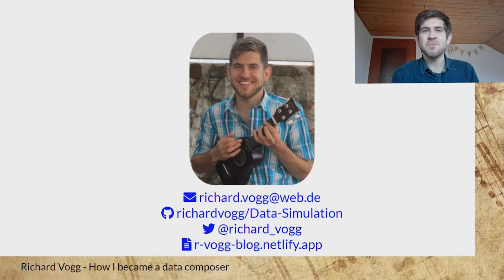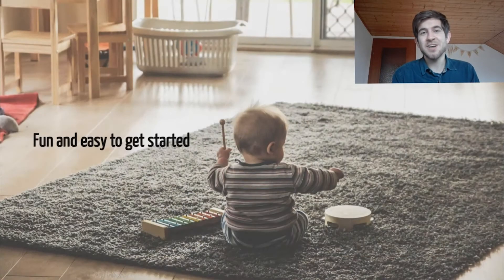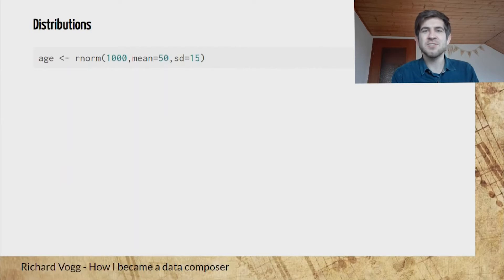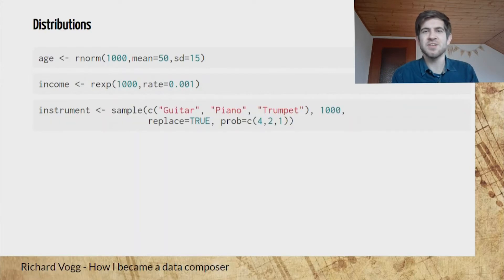Similar to a music composer who assembles musical notes and chords into melodies and songs, I started to play around with data sets, and using R it is very easy to get started. It is fun to get started, as many of you might also have experienced. For example, it is very easy to create a thousand random normally distributed variables, and we can also easily create variables from other distributions like the exponential distribution, or we can create categorical variables by using the sample function.